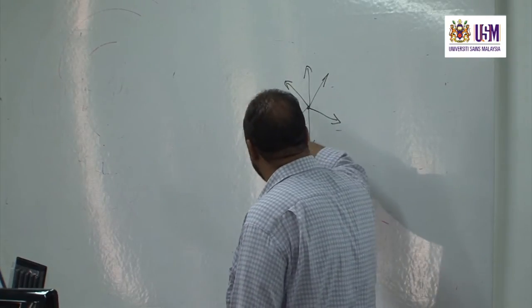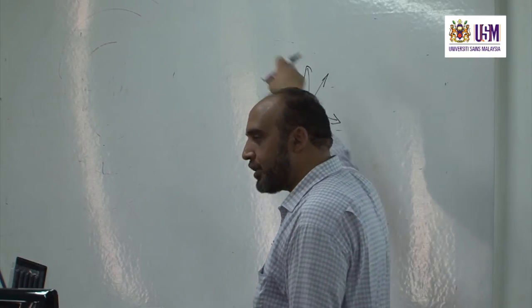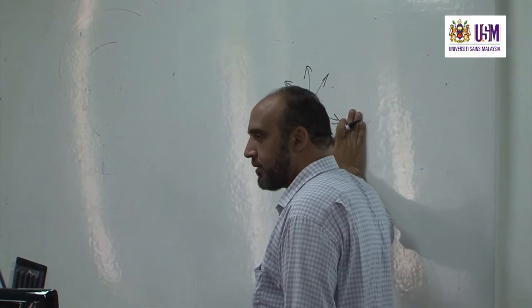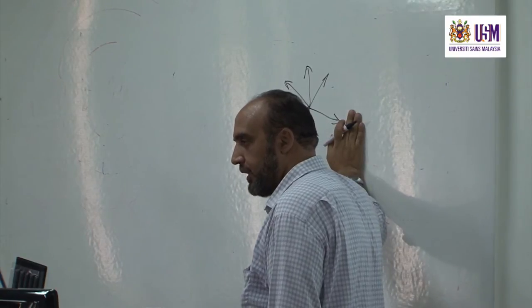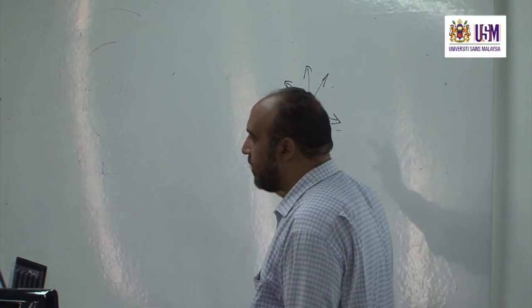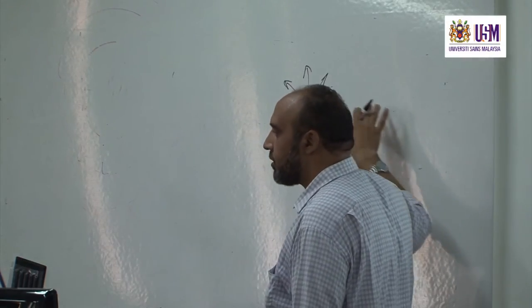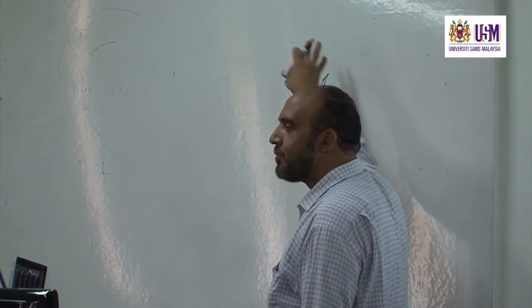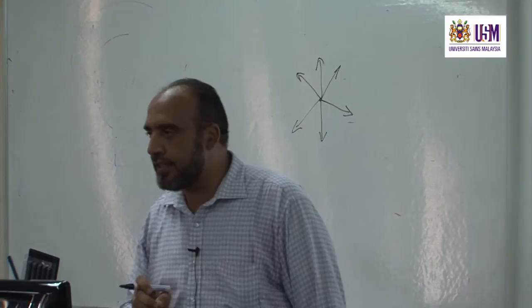If I measure a certain physical property in all directions and find it equal for all directions, the medium is isotropic. If, for example, the velocity is larger in one direction and smaller in another, it is anisotropic behavior of the medium.